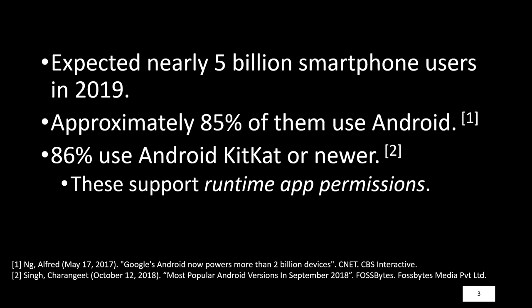Android is an incredibly popular mobile operating system and it continues to rise in popularity. Android is also increasingly sophisticated, with new phones introducing new functionality, sensors, APIs, and smart features all the time. As of KitKat, sensitive APIs are moderated in Android by privacy settings called permissions. These permissions appear in the form of dialogues that allow users to choose whether to allow or deny access at the time that the permission is first requested.